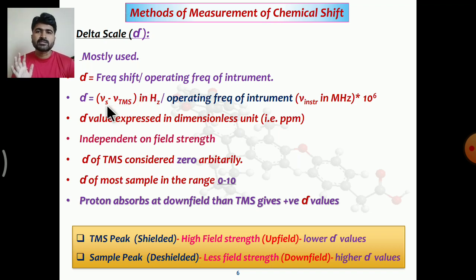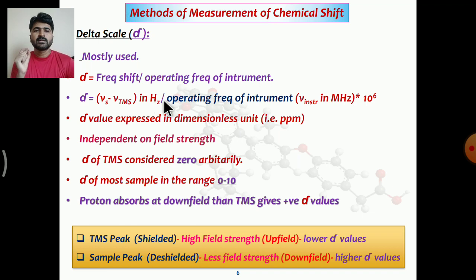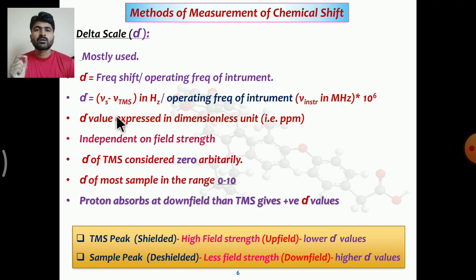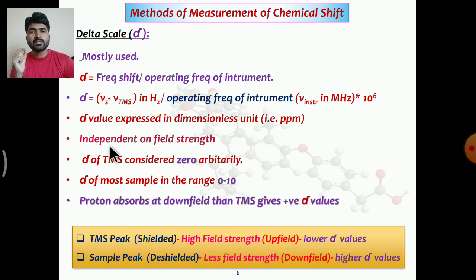The frequency shift is the frequency of radiation required to resonate the sample minus the frequency required to resonate the TMS protons, in hertz. This difference in hertz divided by the operating frequency in megahertz, multiplied by 10^6, converts the value to ppm. The delta value is expressed in dimensionless units of ppm and is independent of field strength.